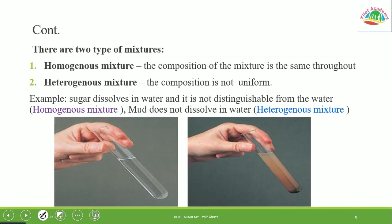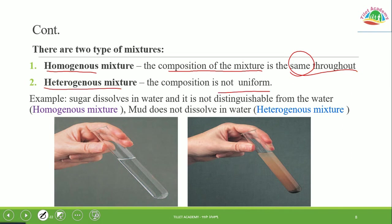There are two types of mixtures. A homogeneous mixture is one where the composition is the same throughout the whole sample. A heterogeneous mixture is one where the composition is not uniform — the components are not evenly distributed and may be microscopically distinct.